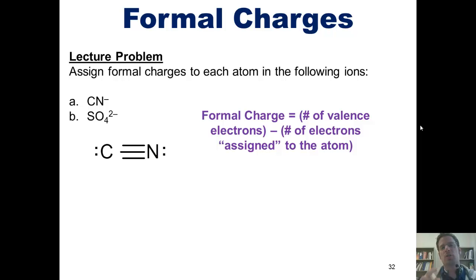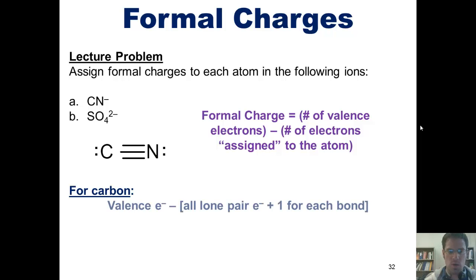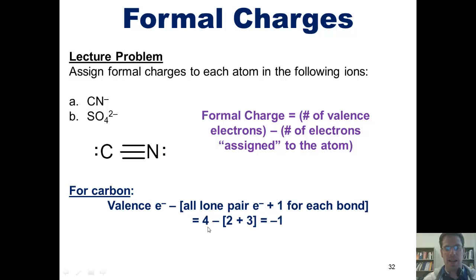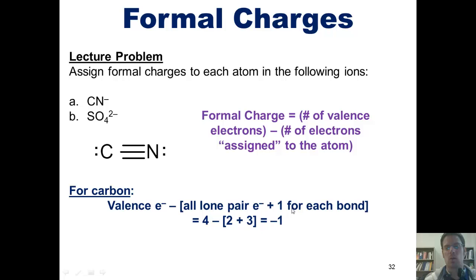So what are the formal charges for each of the atoms in CN⁻? For carbon, the formal charge equals the number of valence electrons minus the number of electrons assigned to it — that is, the sum of all lone pair electrons on carbon plus one electron for each bond carbon is involved in. Carbon has four valence electrons. This particular carbon atom has two lone pair electrons and three bonds, giving one electron per bond. So the overall formal charge of carbon is 4 minus (2 + 3), which is negative one.